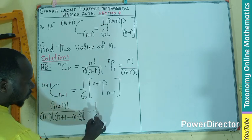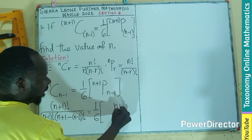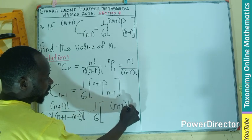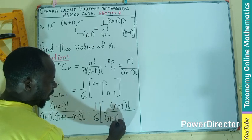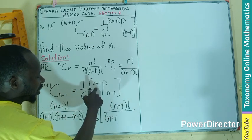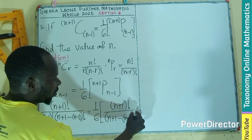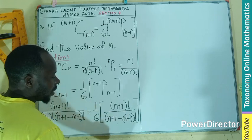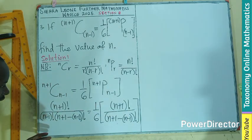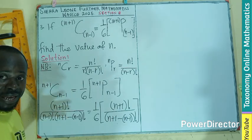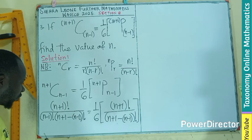Then equals to 1/6. So this should be n+1 factorial divided by n+1 minus n-1 factorial. So now what we need to do is to try our best to be able to cancel some of the factorials, if not all, from the expressions we are having.